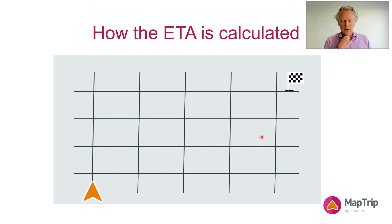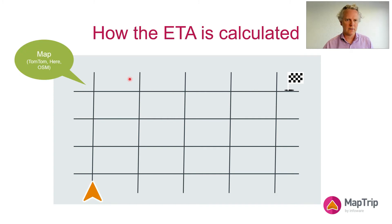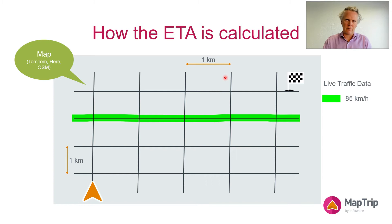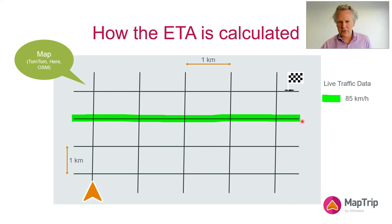So how is the ETA calculated at all? What we have here is a very basic map — we are here and this is our destination, and these dark gray lines are the map. Let's assume that this distance here is one kilometer and that distance is also one kilometer. Now what we put on top of the map — what you see on a map — is the live traffic data, and that is very important. That comes from sources like TomTom, and these green segments tell us that current traffic moves at 85 kilometers an hour on average.